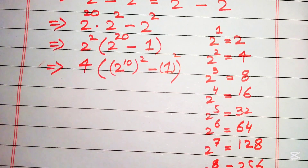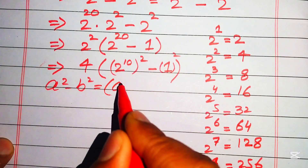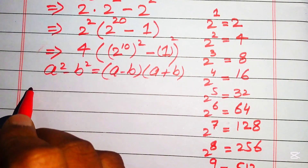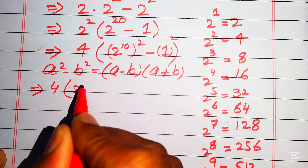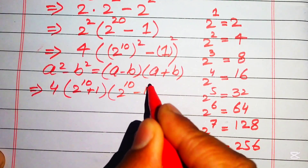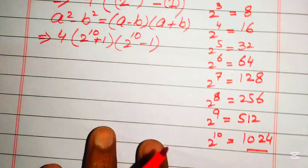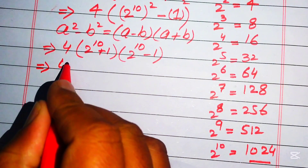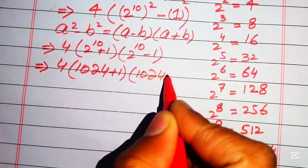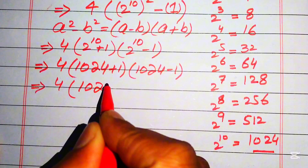Now we write 1 as 1 squared and apply the difference of squares identity: a squared minus b squared equals a minus b times a plus b. Applying this to our expression gives 4 times the quantity 2 to the power of 10 plus 1, times the quantity 2 to the power of 10 minus 1. Replacing 2 to the power of 10 with 1024, we get 4 times 1025 times 1023.